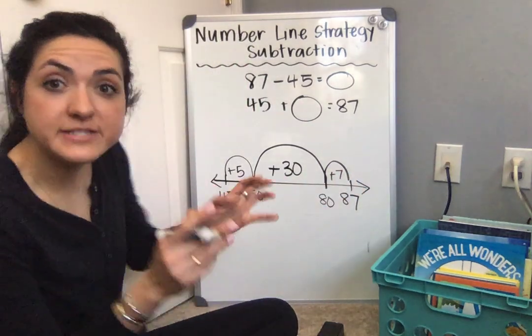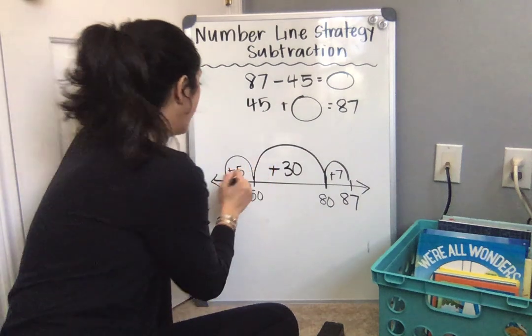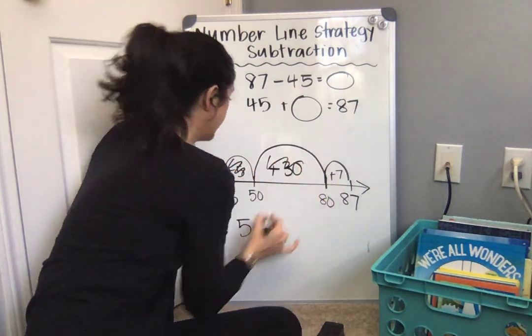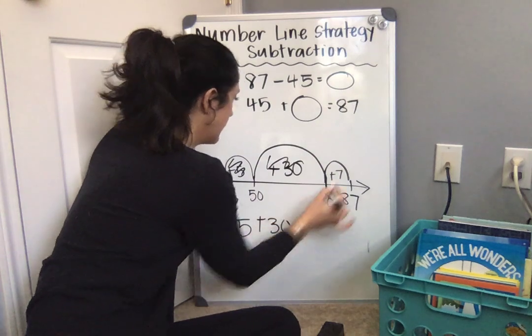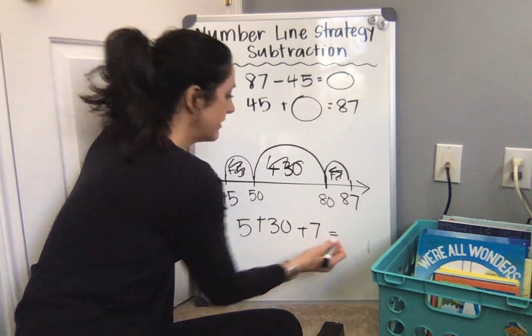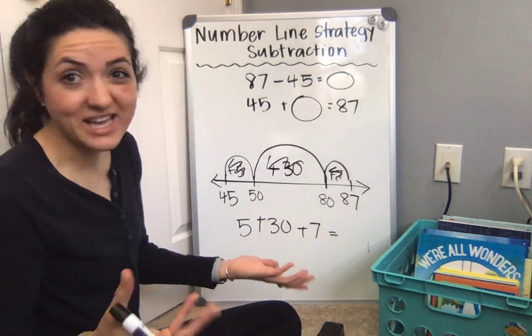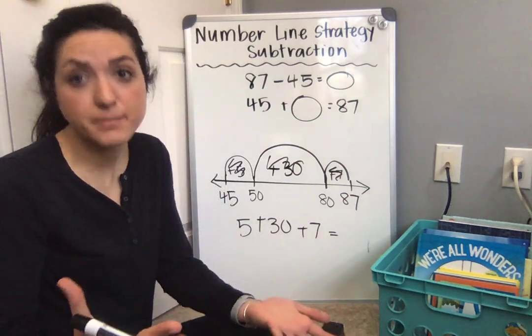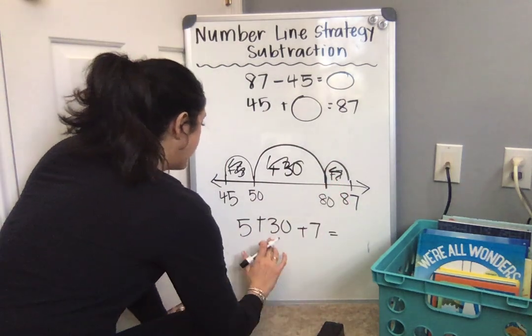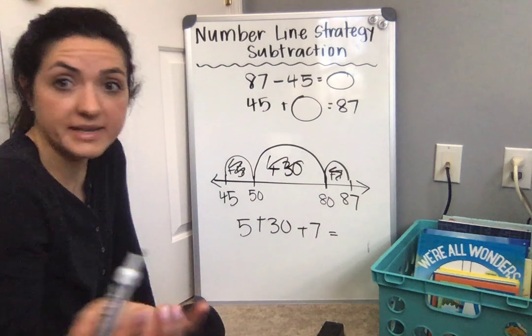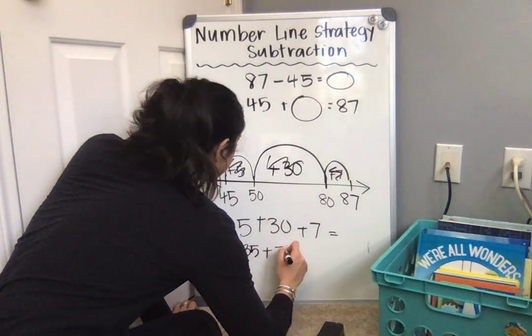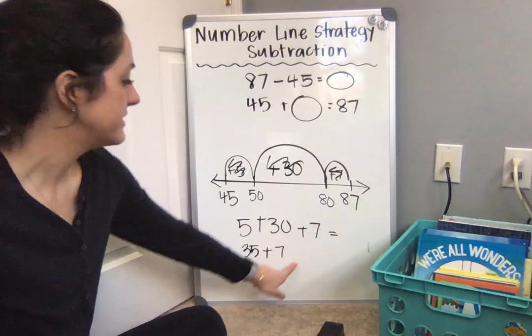Okay, now my next step is to add up all my jumps. So I need to say 5 from here, then 30, and then 7. So 5 plus 30 plus 7. Now, I can break this up again. I don't have to add all these numbers together at once because that might be overwhelming. So I'll look at my first two numbers: 5 plus 30. Well, there's a friendly number. That makes it easy. 5 plus 30 is 35, and then I need to add 7 to that. So 35 plus this 7.